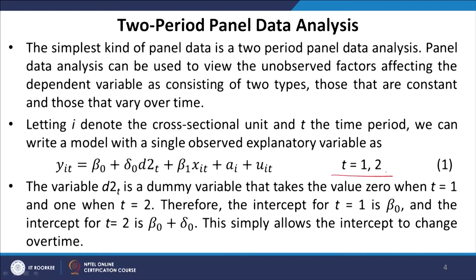Here t takes only two values, 1 and 2. For an individual i, one equation will be y_i1 and the other will be y_i2. The variable d2t is a dummy variable that takes the value 0 when t = 1 and 1 when t = 2 — it is a time dummy specifically for the second period. Therefore the intercept for t = 1 is β₀, and the intercept for t = 2 is β₀ + δ₀, which simply allows the intercept to change over time.